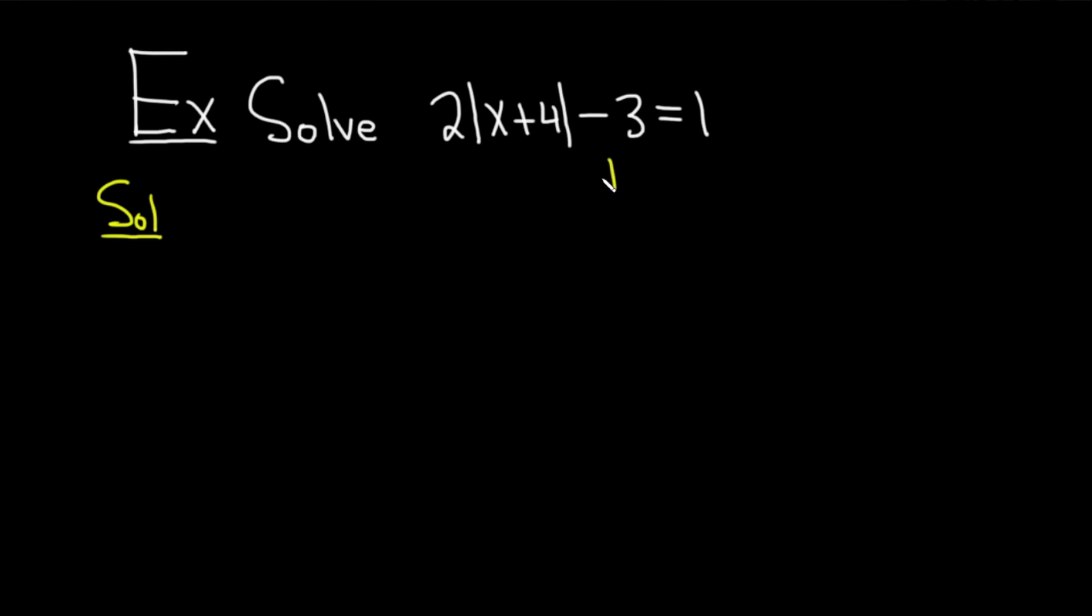In this case, we'll start by adding the 3 to both sides. So plus 3 plus 3. We get 2 times the absolute value of x plus 4. And that's equal to 1 plus 3 is 4. And we're almost there. We just have to get rid of this 2. Since it's being multiplied by the absolute value to undo the multiplication, we use division. We divide both sides by 2. We get the absolute value of x plus 4. And that's equal to 4 over 2, which is 2.